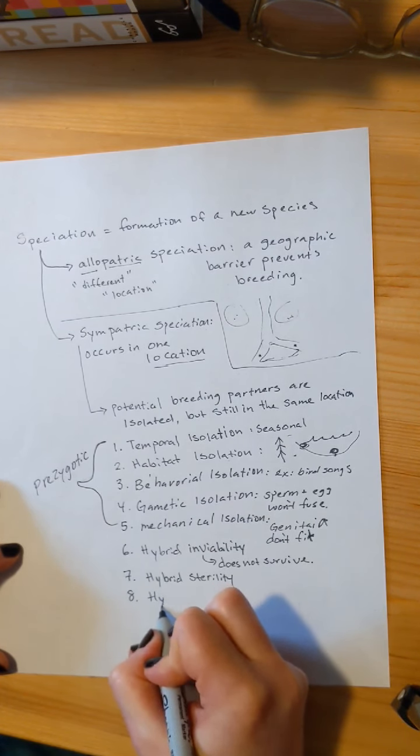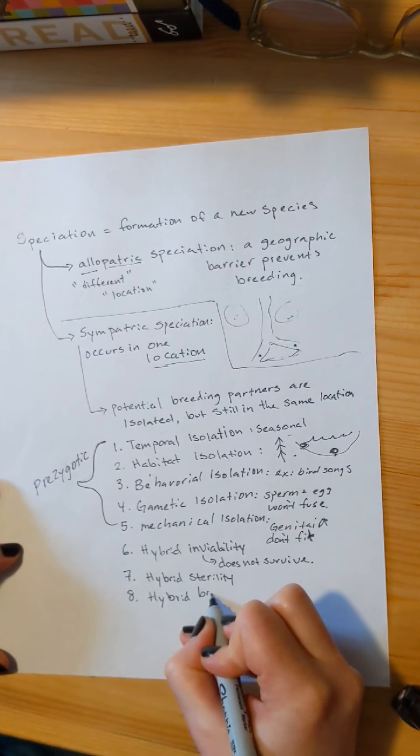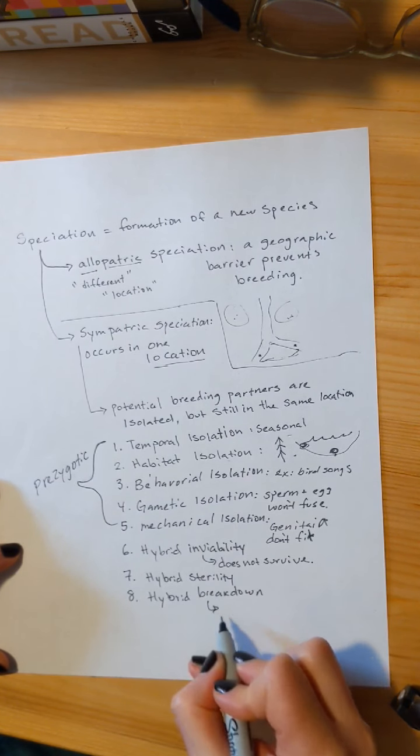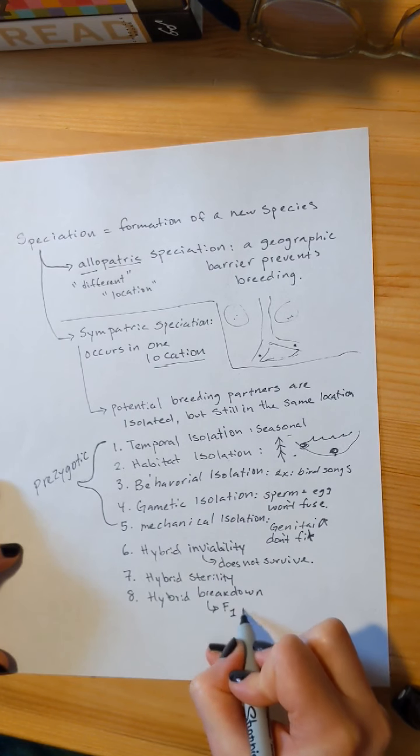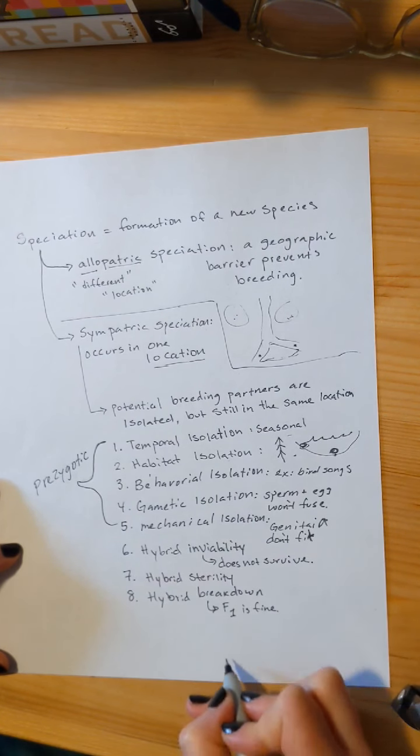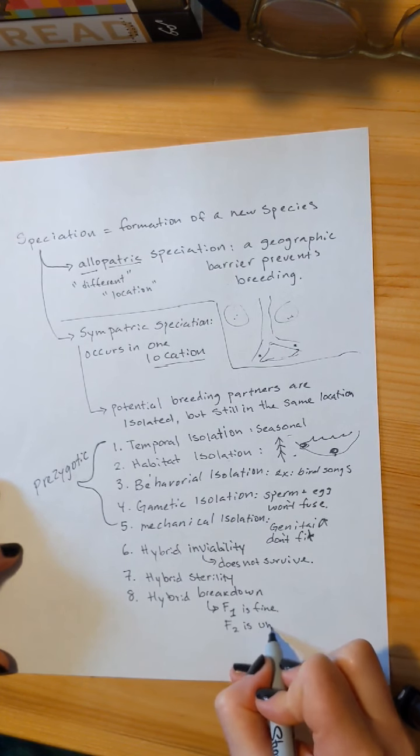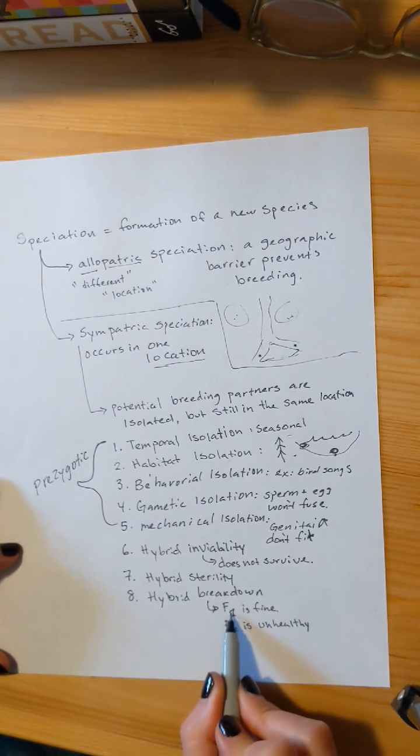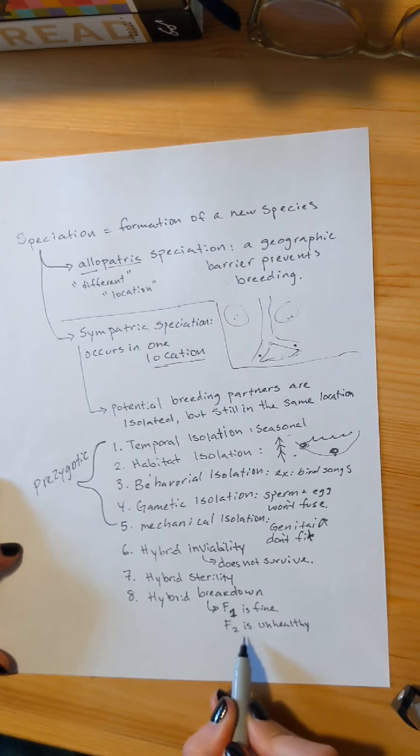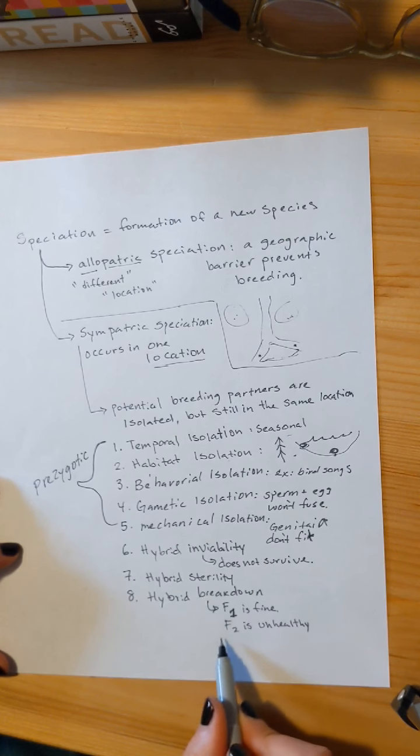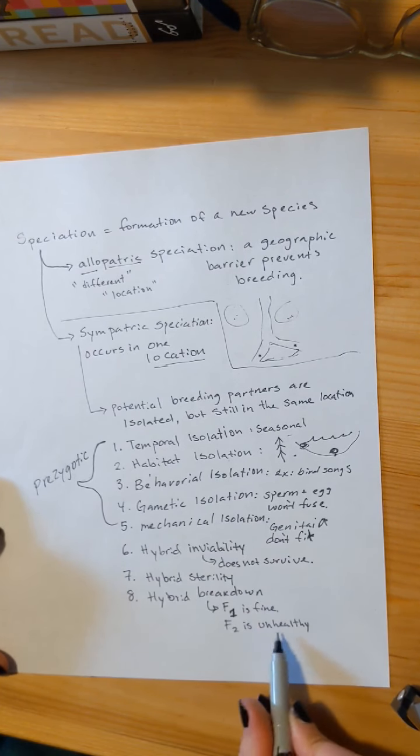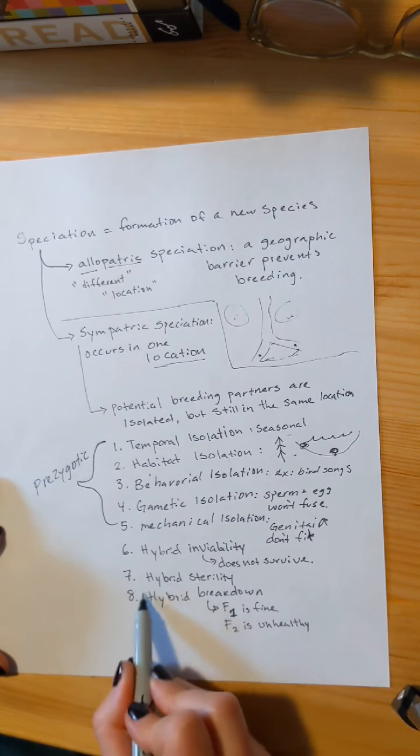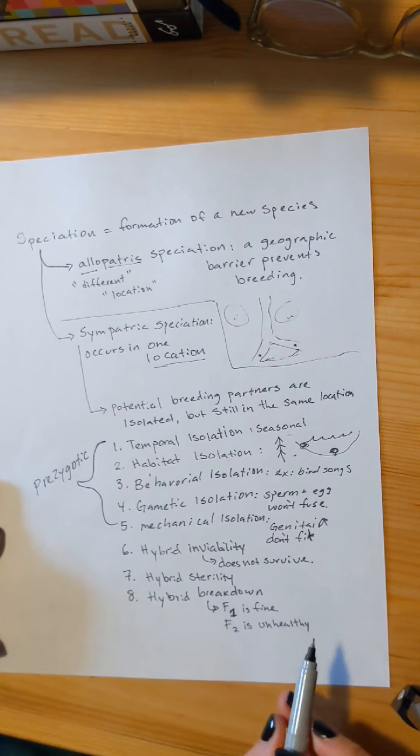Similar is hybrid breakdown. Hybrid breakdown is interesting. It works like this. The F1 generation is fine, and then the F2 generation is unhealthy. So your offspring can produce offspring of their own, but the grandkids are sick. The grandkids are not viable, or they're sterile, or they're just really sickly, and they kind of die before they're able to reproduce themselves. And so your hybrid that could potentially become a new species just breaks down and does not become a new species.